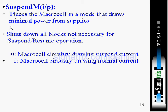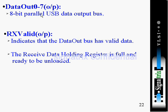The data output bus is an 8-bit parallel USB data output bus. RX valid is an output signal present during receive time, indicating that the data output bus has valid data. It goes from UTMI to the serial interface engine, signaling that the receive data holding register is full and ready to be unloaded.